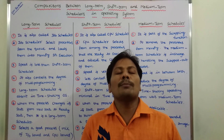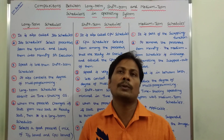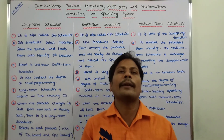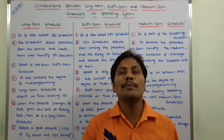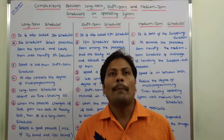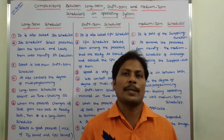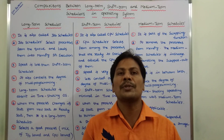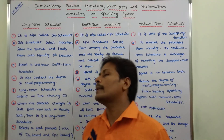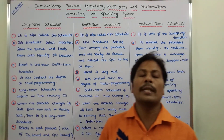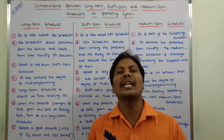The fifth difference: in the case of the long-term scheduler, there is no occurrence of a timesharing operating system. In the case of the short-term scheduler, the timesharing operating system is minimal — it uses the timesharing operating system in a minimal manner. The medium-term scheduler uses the timesharing operating system.